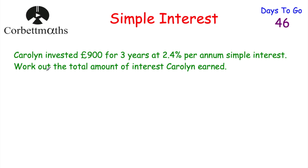Let's have a look at another question. Carolyn invested £900 for three years at 2.4% per annum simple interest. Work out the total amount of interest Carolyn earns. This question is a calculator question — if you want to try it yourself, feel free to press pause and work out the answer, otherwise I'm going to go through it now.